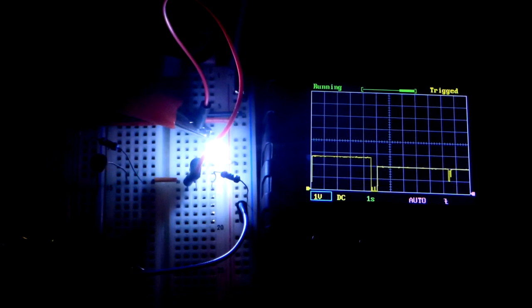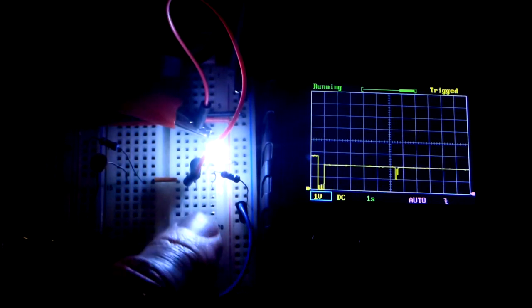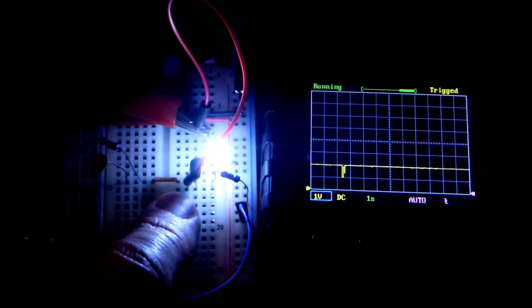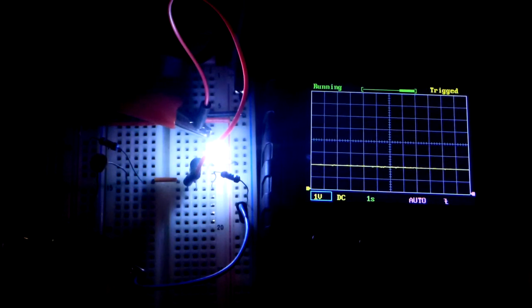But if we go to the emitter, we lose about half a volt there again—about that 0.6 volts. So that is setting the current. Whatever the voltage is across the emitter resistor right there, it's the base voltage minus about 0.6 volts across the emitter resistor, and then that sets the current even through the LED.